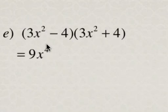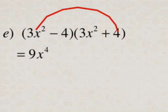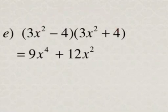Then we're going to multiply the outside terms, so 3x squared times 4 is plus 12x squared. Then multiply the inside terms — negative 4 times 3x squared is minus 12x squared.